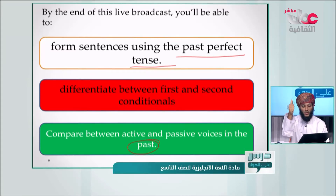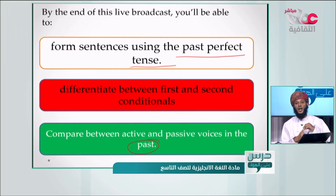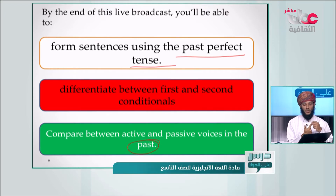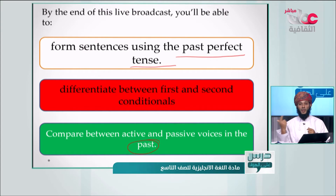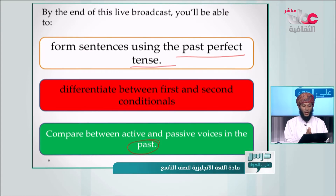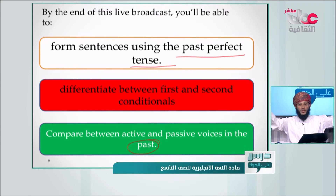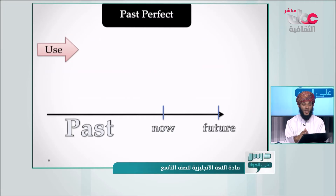We have three objectives. The first one: we are going to form sentences using the past perfect tense. The second one: we are going to differentiate between the first and the second conditionals. The third one: we are going to compare between active and passive voices.